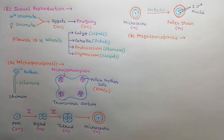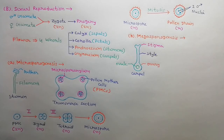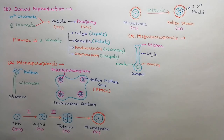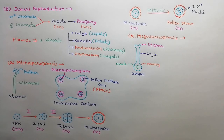Next, we will discuss about megasporogenesis. In crop plants, megaspores are produced in megasporangia, which are also known as ovules. Ovules are produced in the carpel. The carpel has three parts: stigma, style, and ovary. Ovules are developed inside the ovary on the placenta.